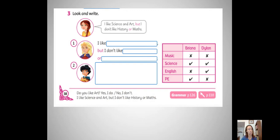Entonces, ahora que sabemos esto del but, vamos a responder y hacer el ejercicio número tres. I like science and art, but I don't like history or maths. Entonces, cuando voy enumerando las cosas que me gustan, voy a usar and. Otro ejemplo.